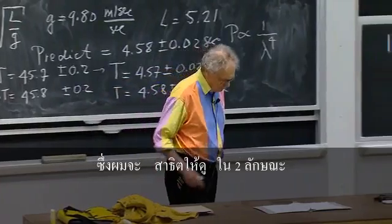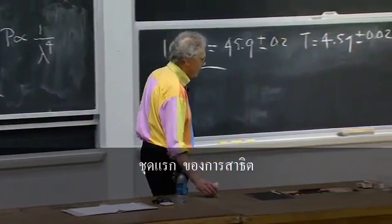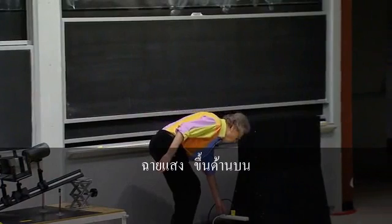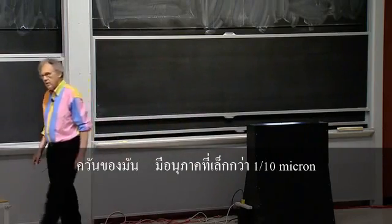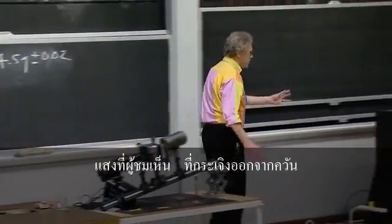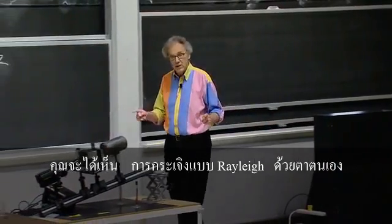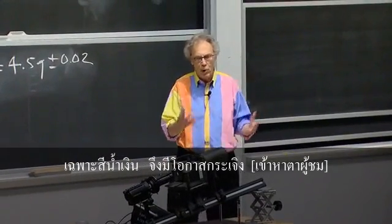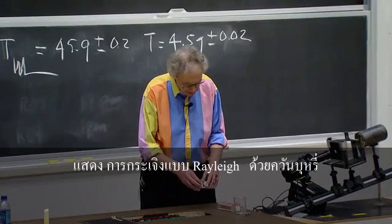I'm going to demonstrate that to you in two completely different ways. The first way is to make it completely dark in the lecture hall and have light going straight up. Then I will light a cigarette, and the smoke of a cigarette has particles that are smaller than a tenth of a micron. So the light that you will see scattered off the smoke will be blue — you will have seen Rayleigh scattering with your own eyes, because the red light more or less goes through and blue dominates.